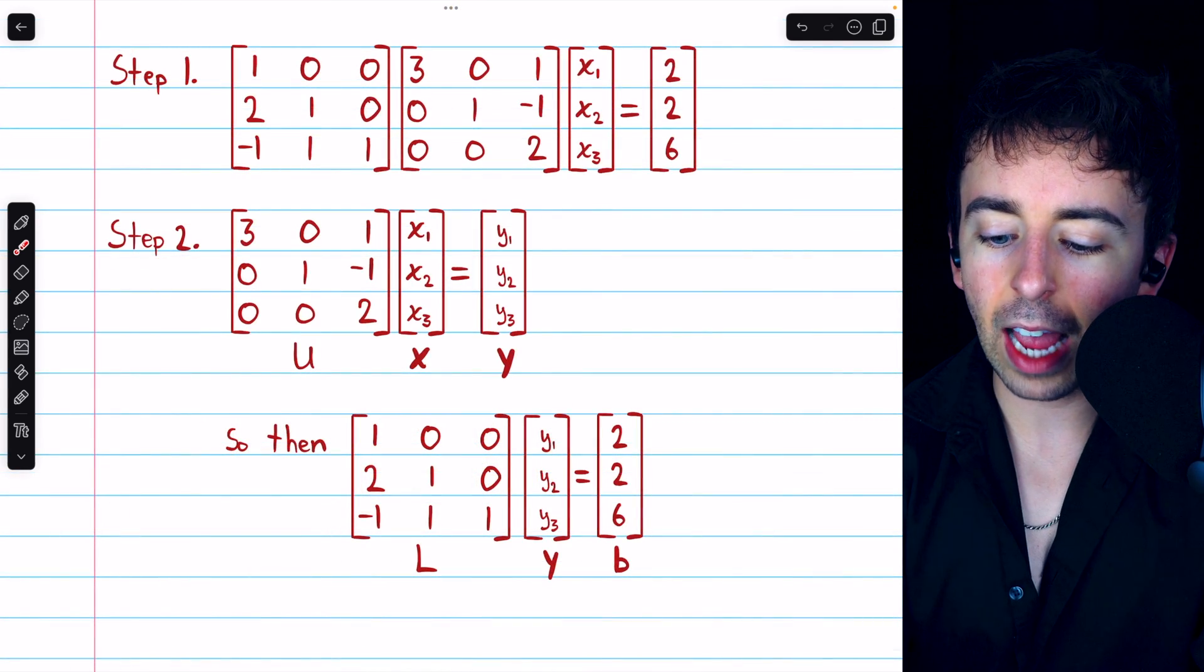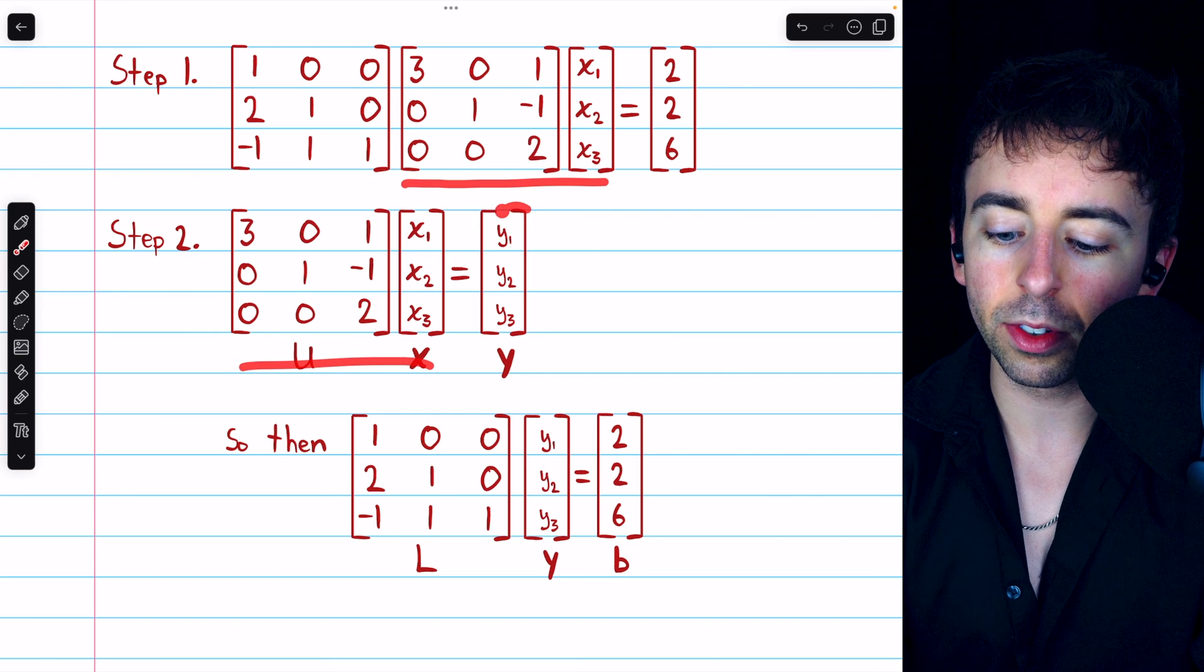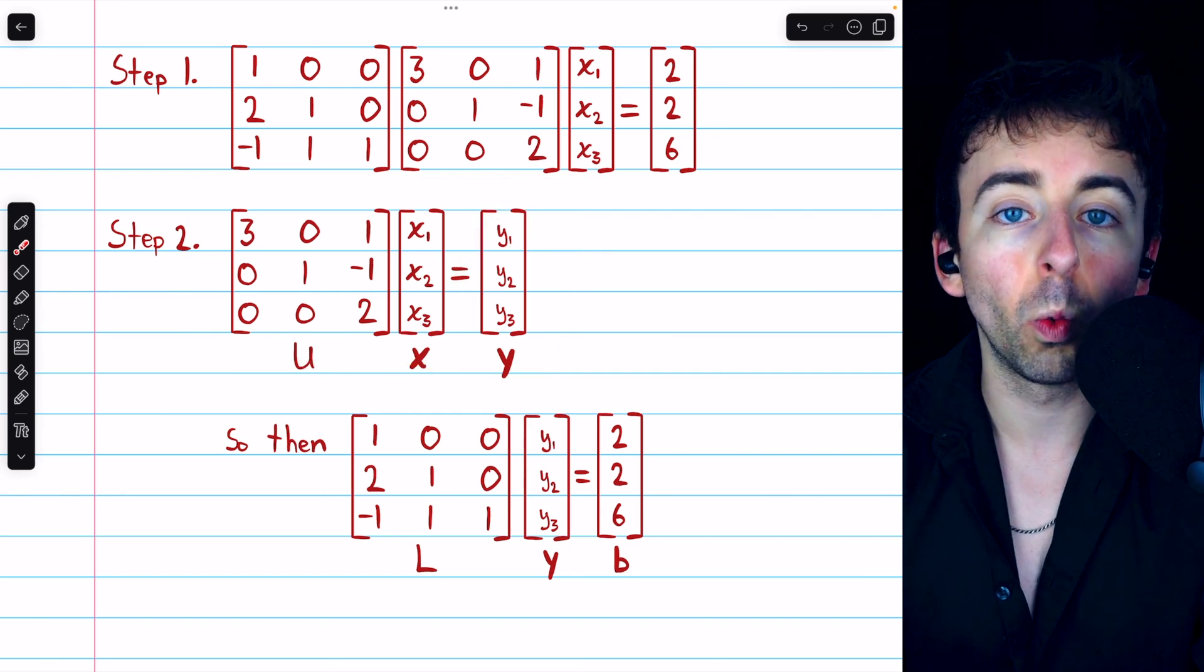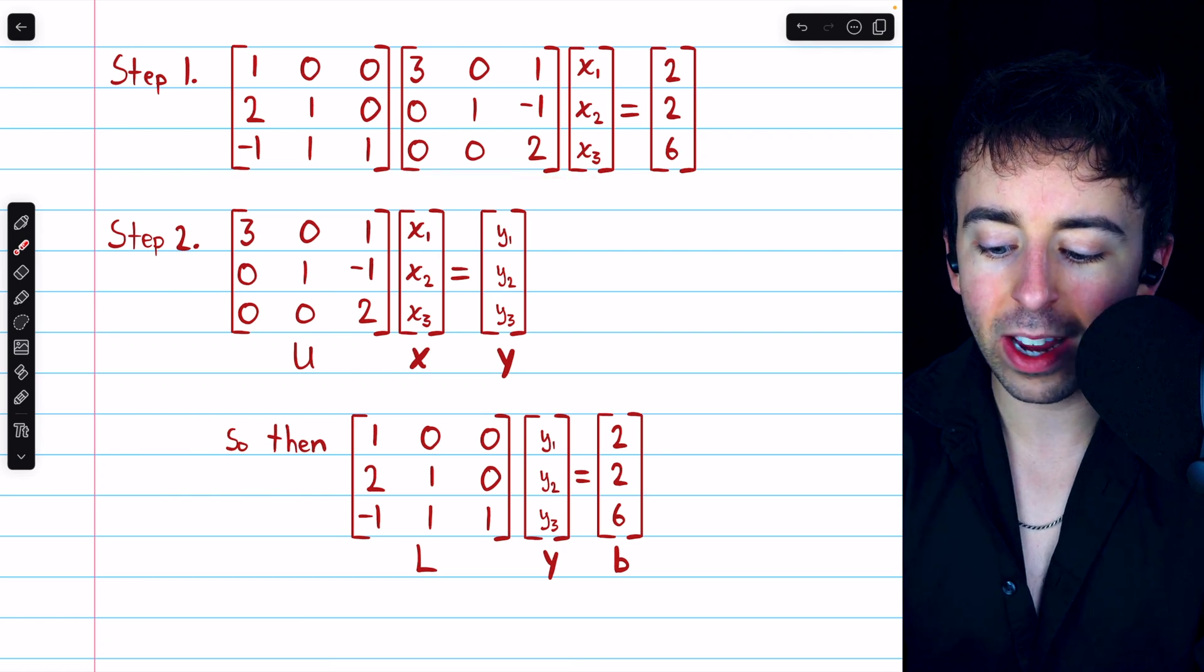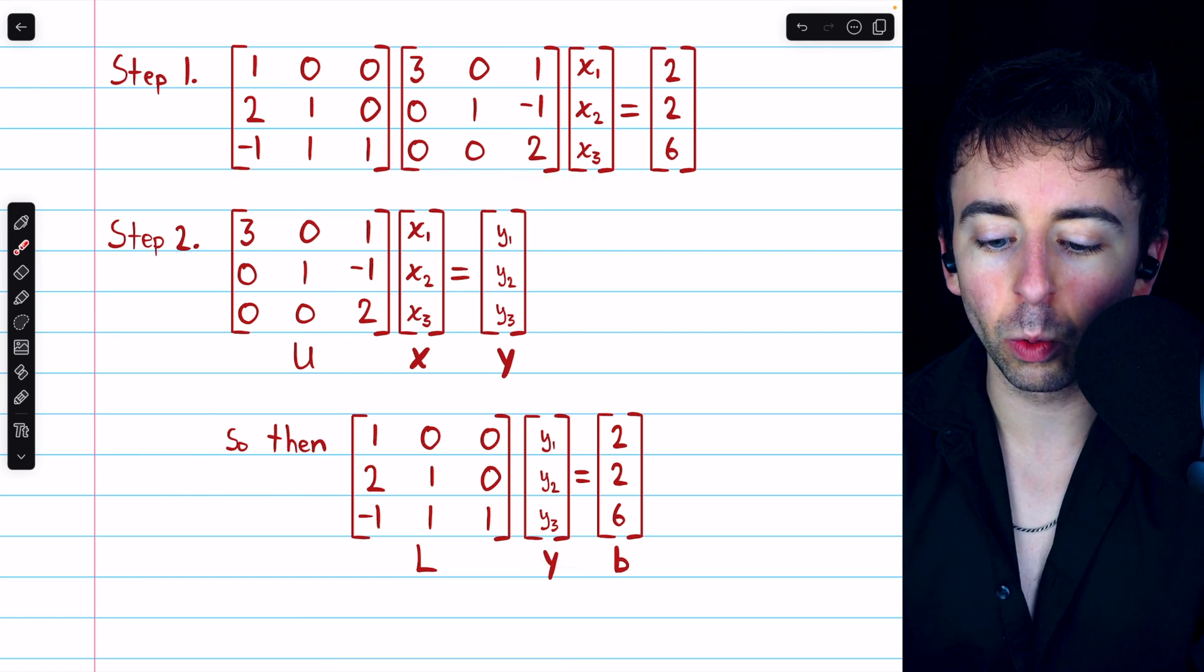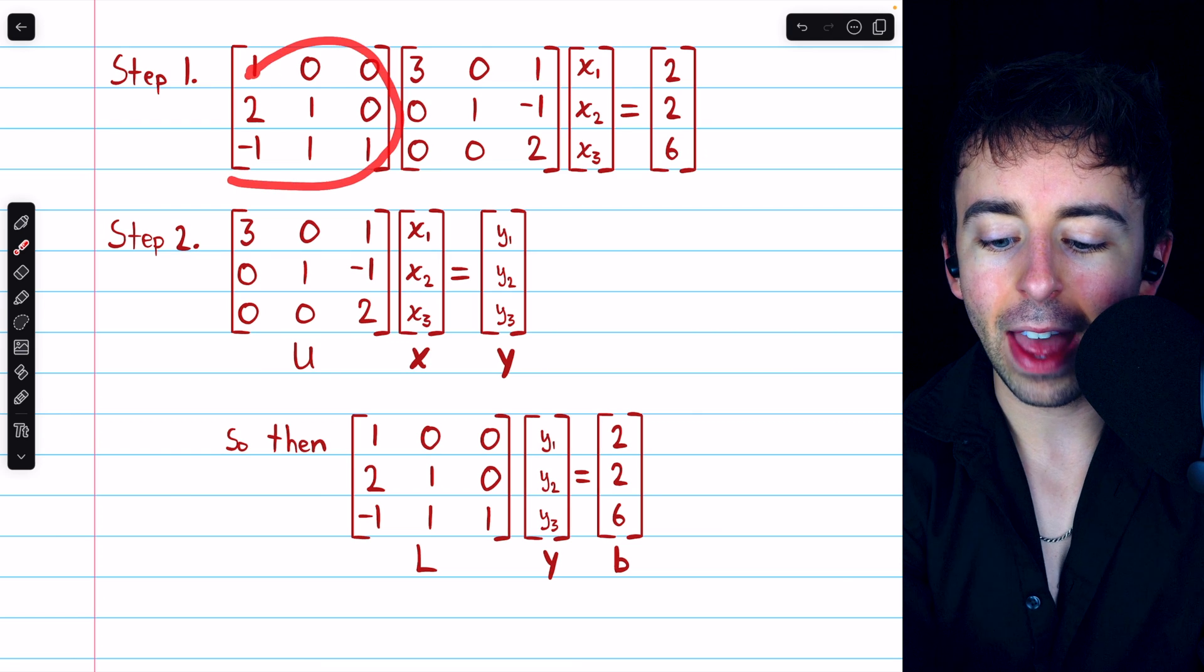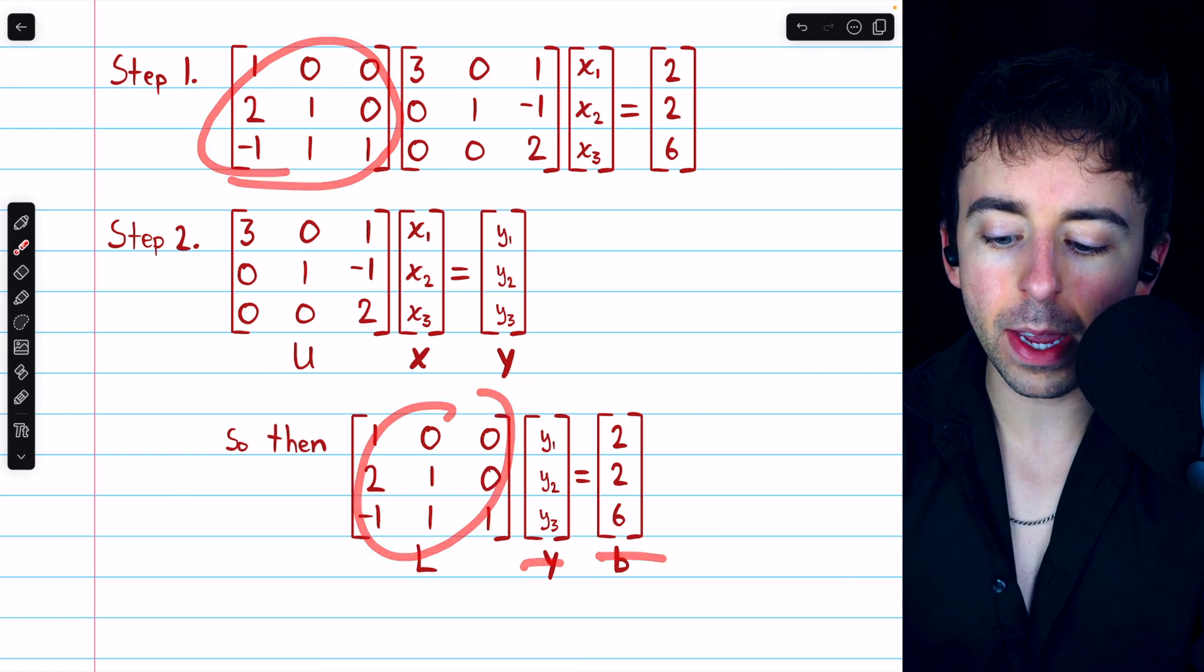Then, step two is to say U times X equals this new variable vector Y, and then we make the substitution, replacing U times X in that equation with this variable vector Y. Thus, we have L times Y equals B.